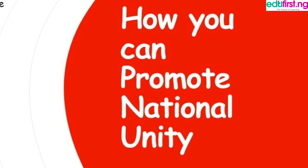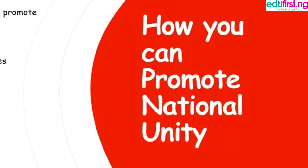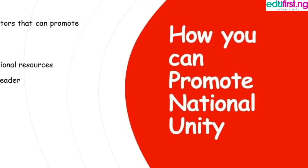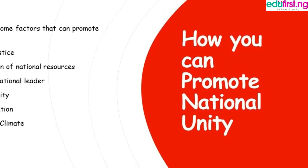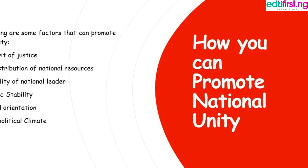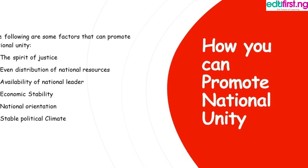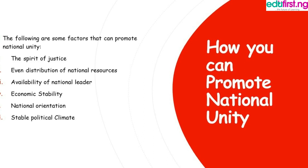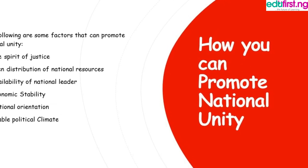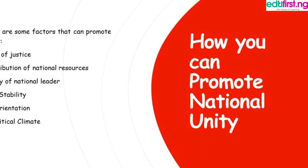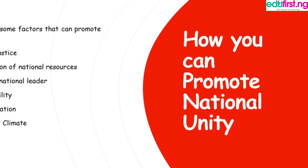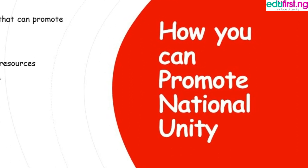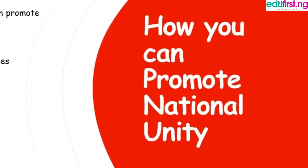The following are some factors that can promote national unity. The spirit of justice: the main duty of the government is to respect the spirit of social justice. The government must be just and seen by the generality of the people to be just. Bias in favor of a section of the country must be avoided. The government must avoid being biased so that those in positions of authority will be able to promote unity in the country.